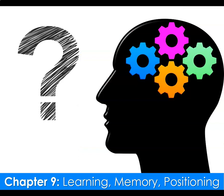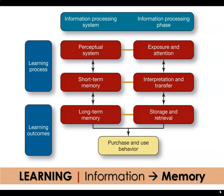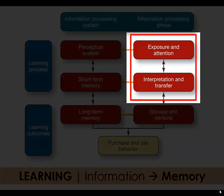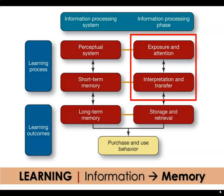Let's continue our discussion into Chapter 9 about learning, memory, and product positioning. This figure from your textbook helps us understand how information is processed, what phase it's processed in, and the variety of learning outcomes associated with this. It's important to understand the relationship between learning and memory and how that happens through information. All the stages of perception are playing a role in learning. Memory is both an outcome of learning and a part of the process of learning.